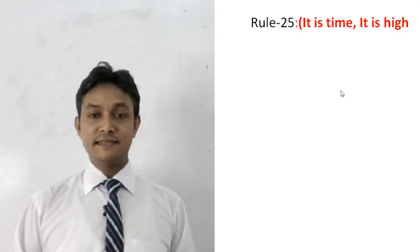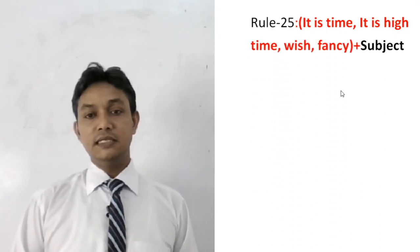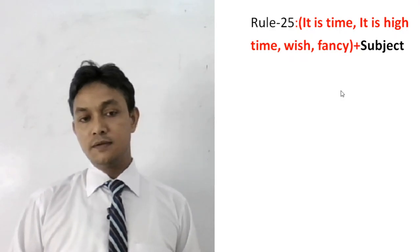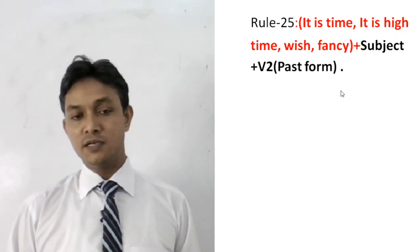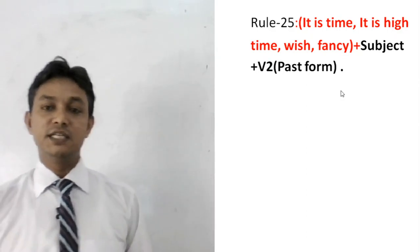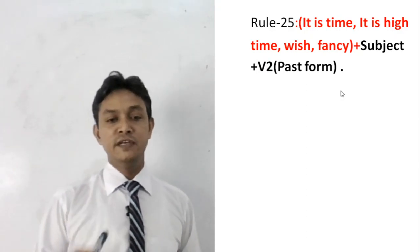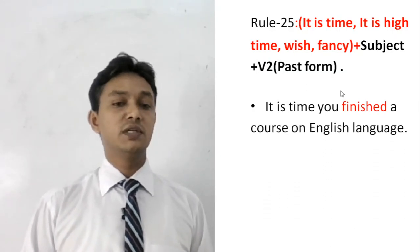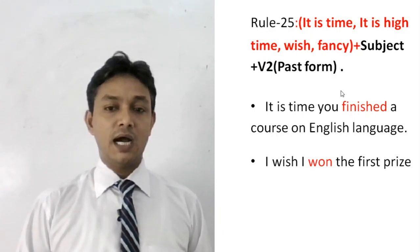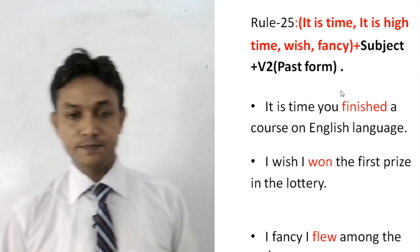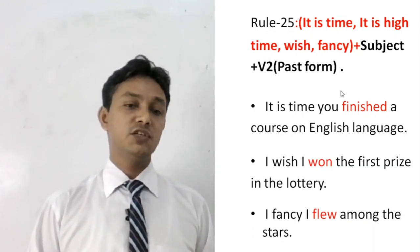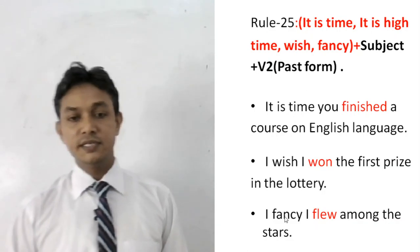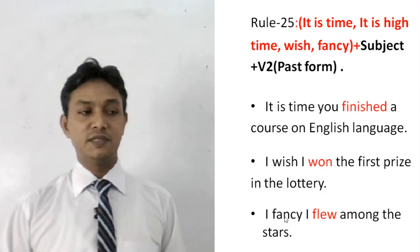Rule number 25: If we find 'it is time', 'it is high time', 'wish', or 'fancy' in any sentence, we use V2 or the past form of the verb. Examples: 'It is time you finished a course on English language.' 'I wish I owned the first prize in the lottery.' 'I fancy I flew among the stars.' The meaning of 'fancy' is to imagine something impossible, and after it we use V2 or the past form.